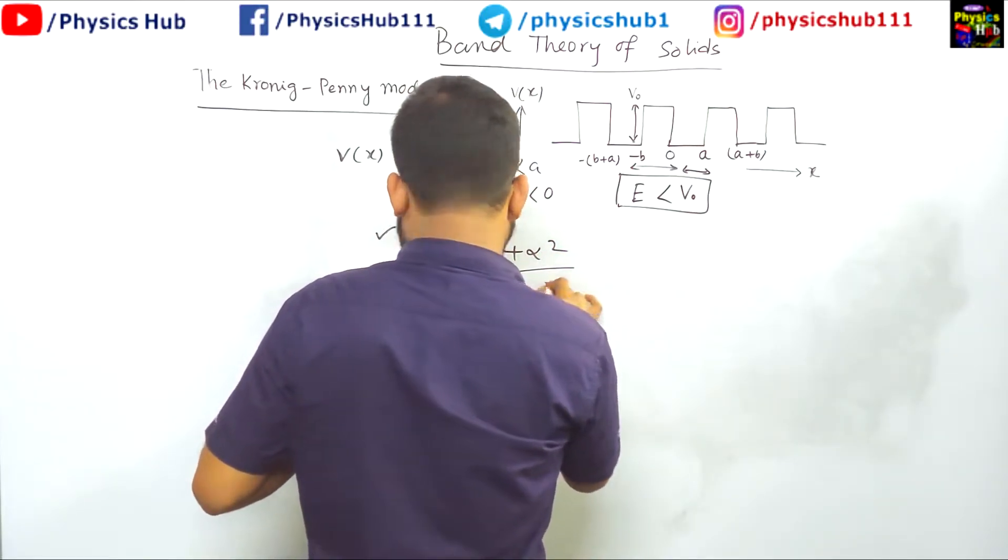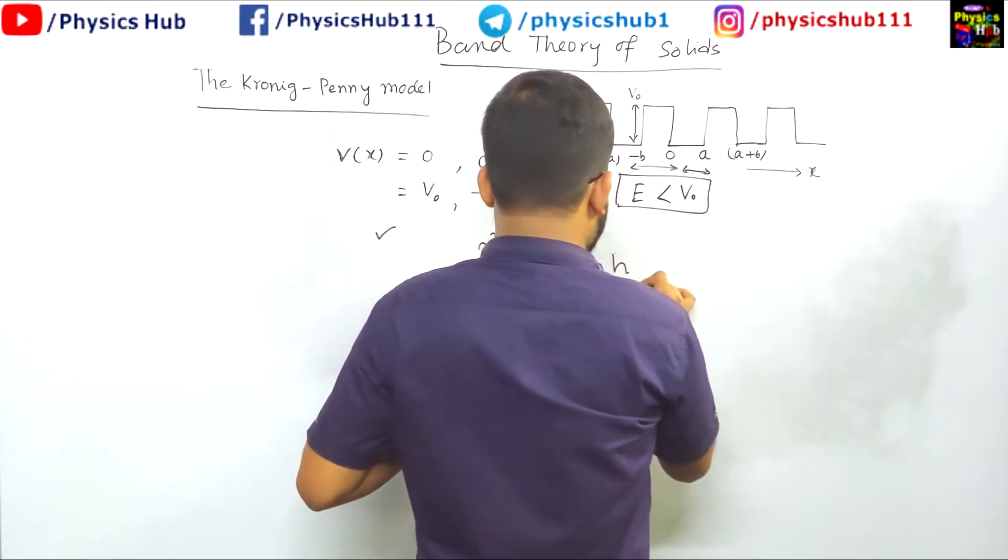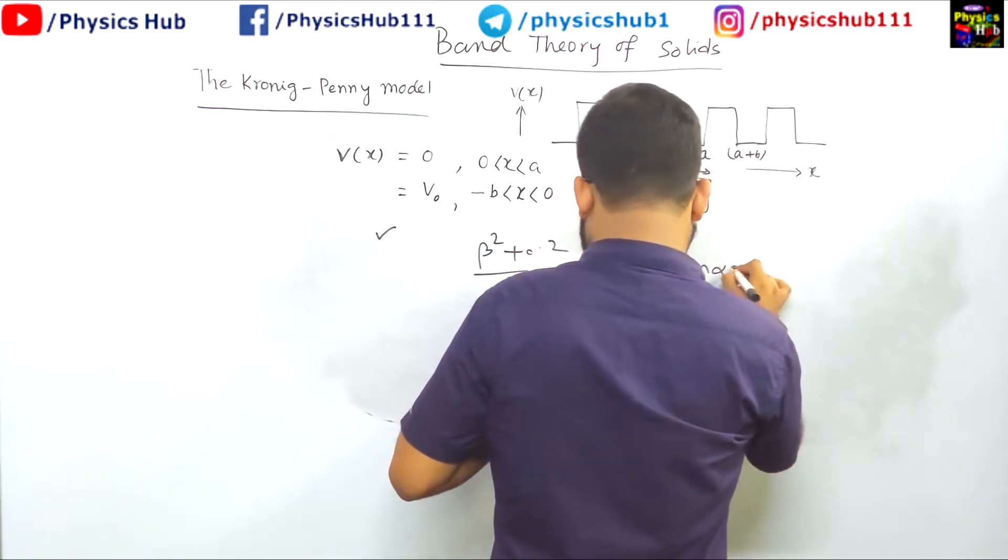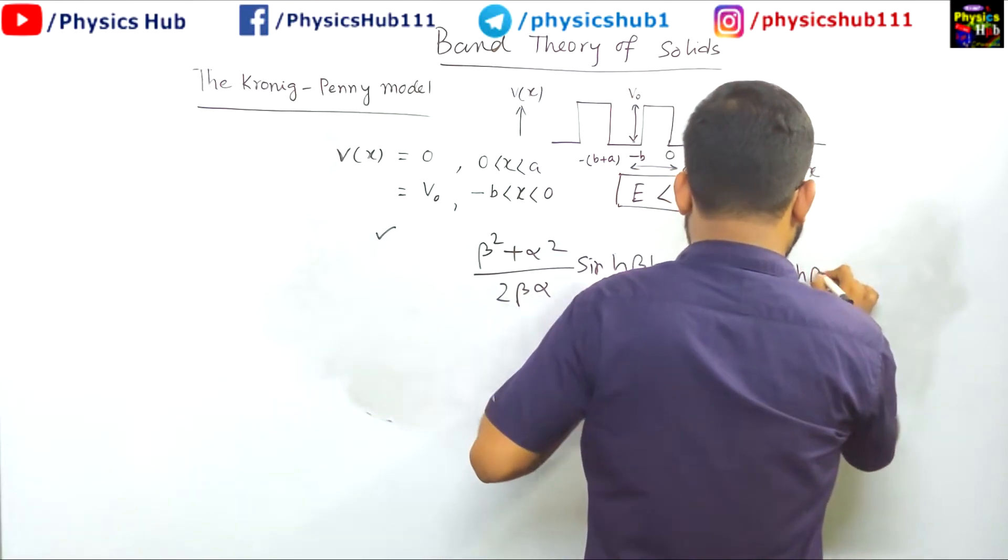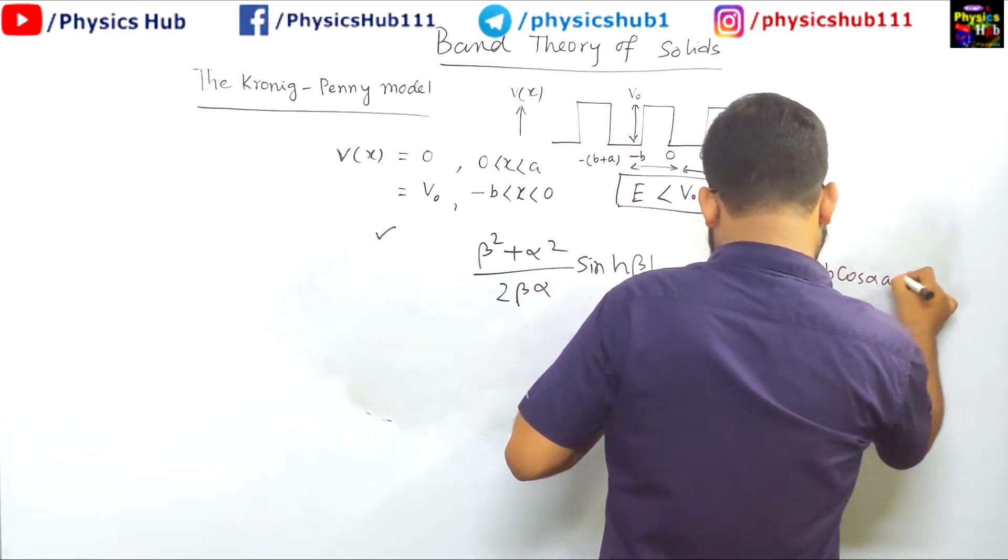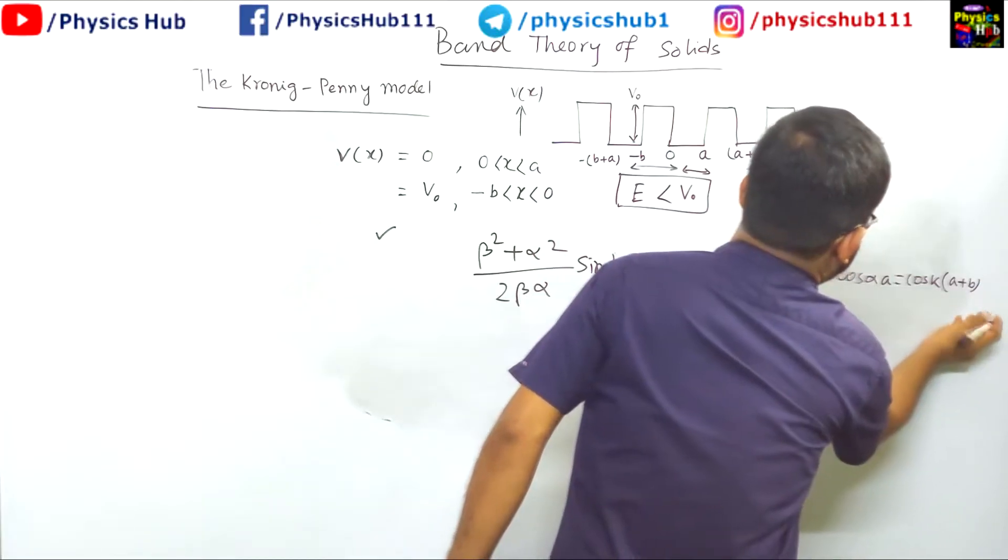(β² + α²)/(2βα) sinh(βb) sin(αa) + cosh(βb) cos(αa) = cos[k(a + b)].